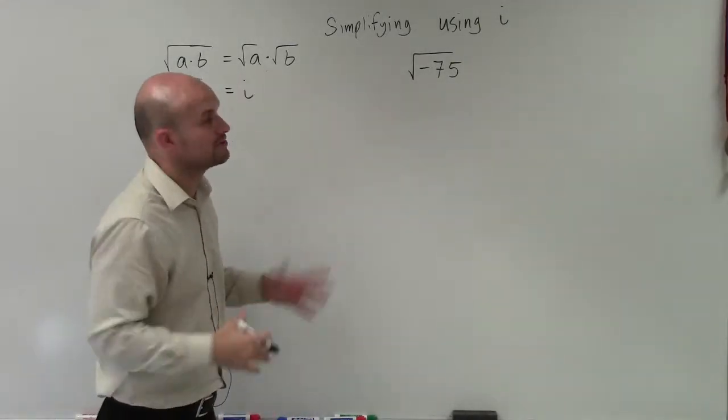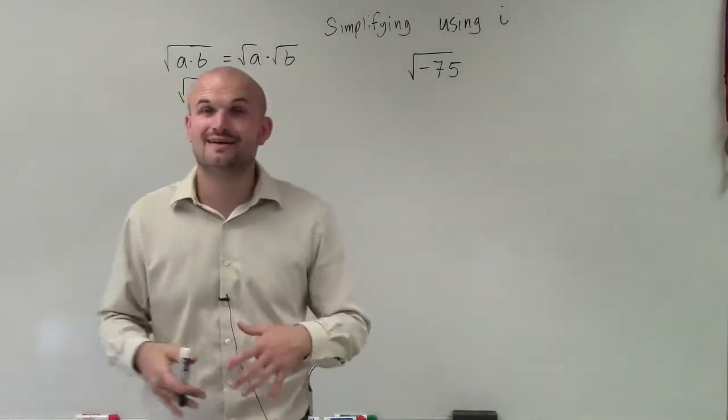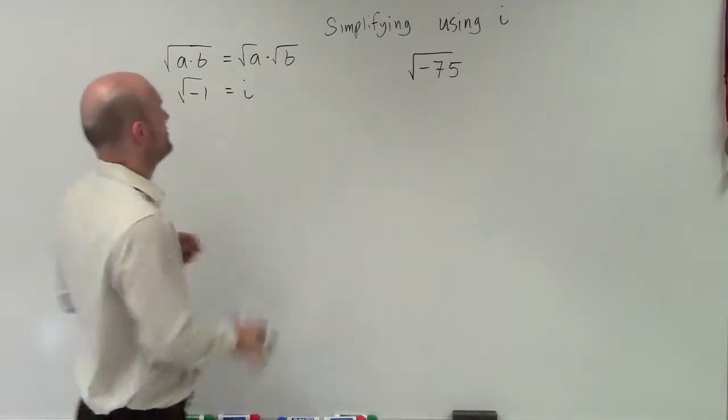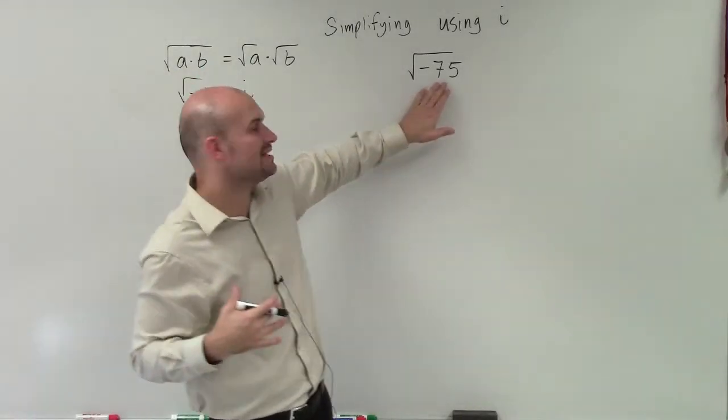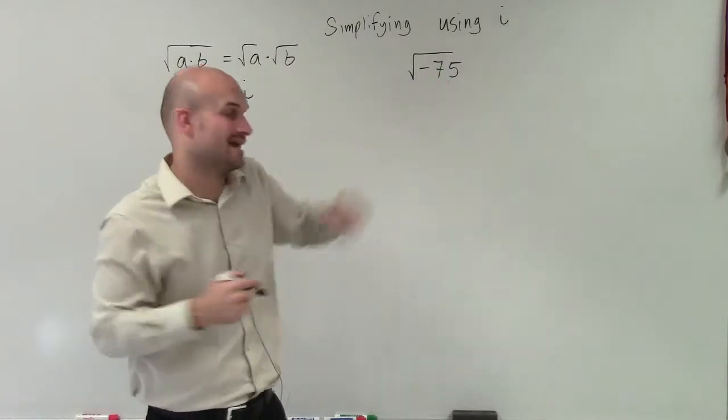Welcome. So now what we're going to do is simplify the square root of negative 75. We want to break this up into a product and break this negative into the negative 1.